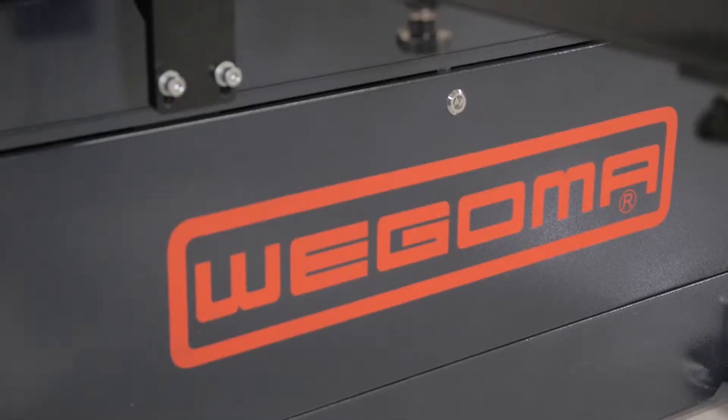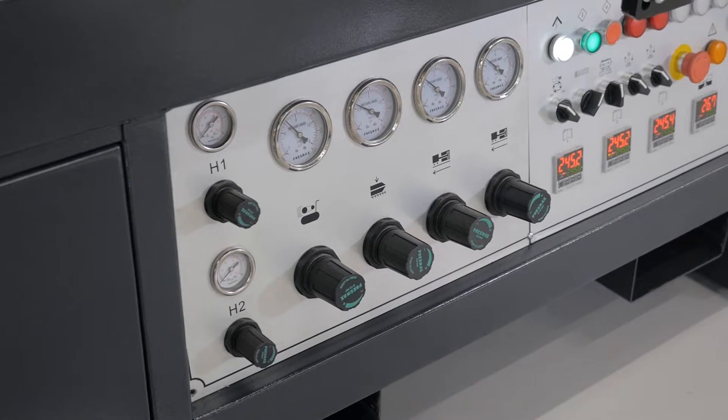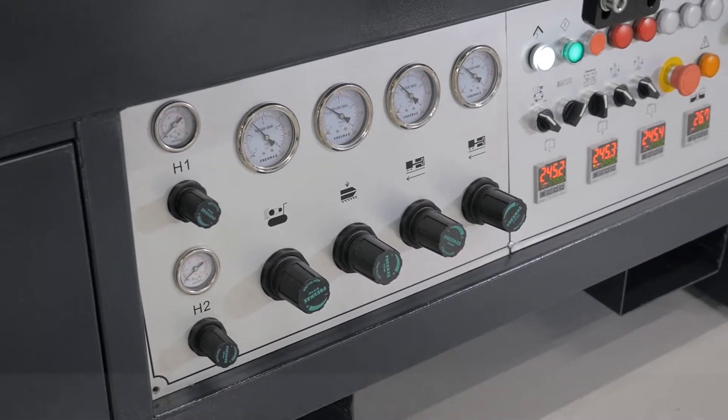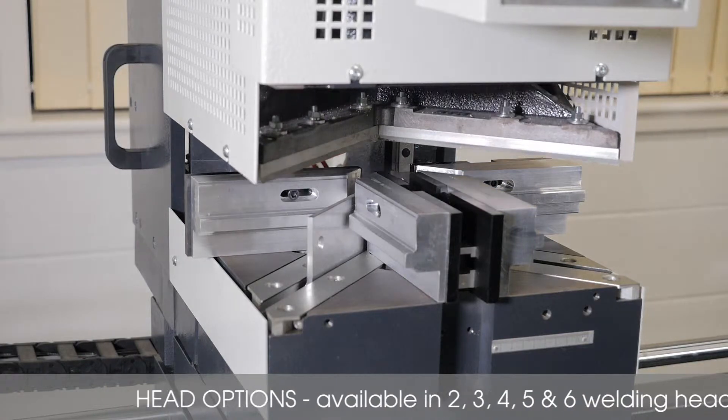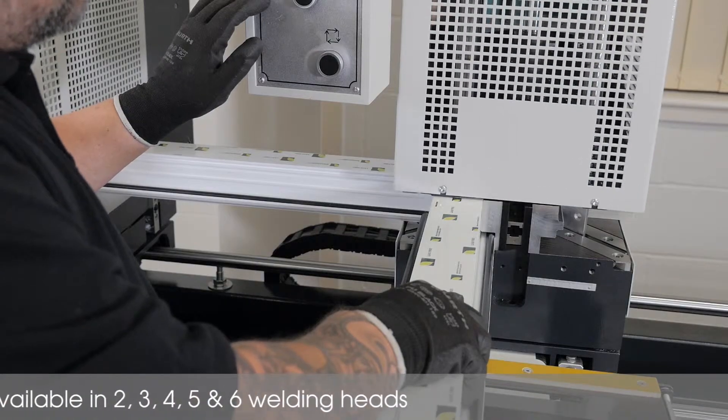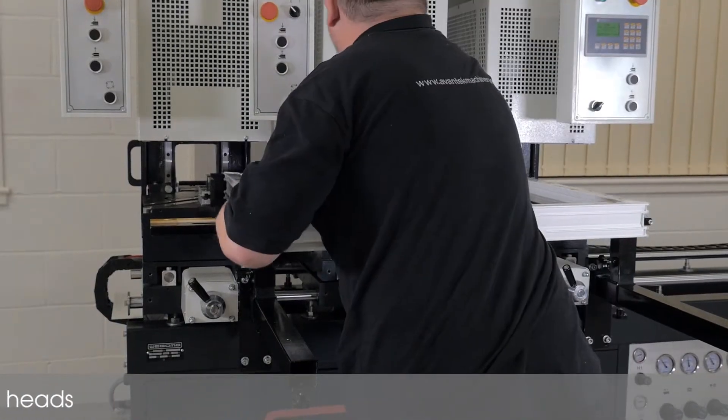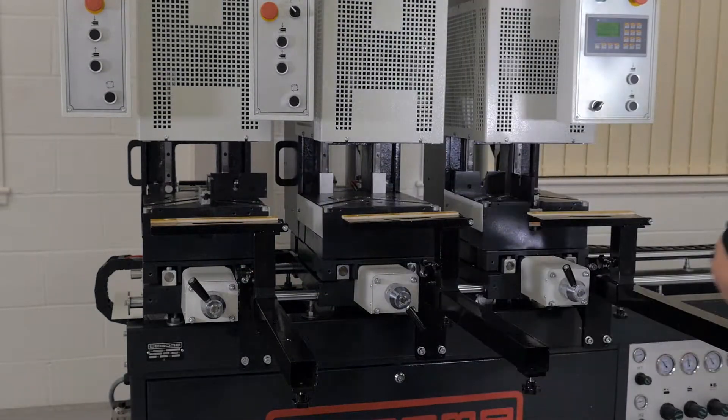The Wagoma Uni inline welding range of machinery is ideal for the welding of PVC-U window profiles and is available in 2, 3, 4, 5 and 6 head options. The model shown during this video is the 3 head option.